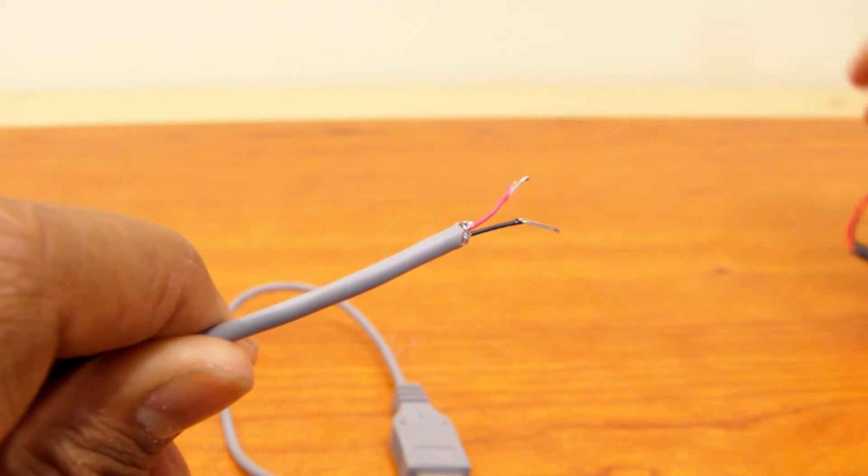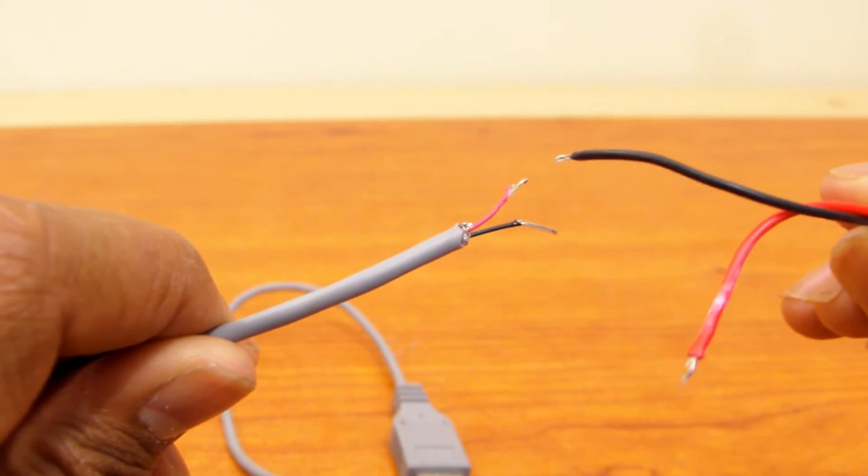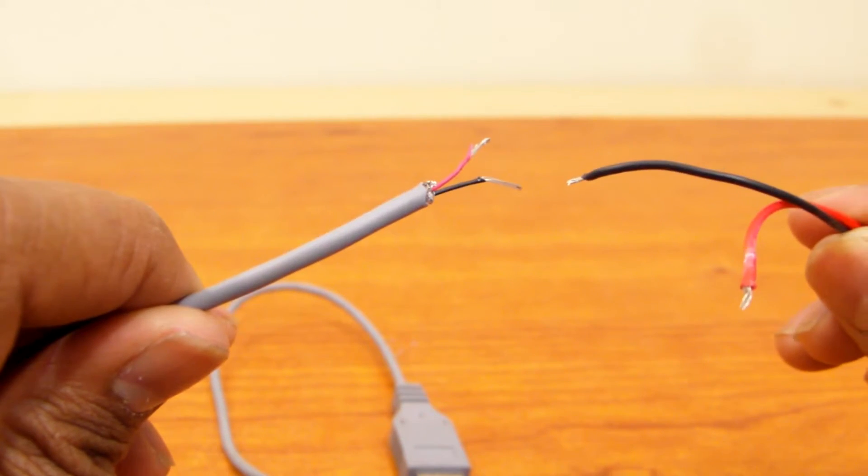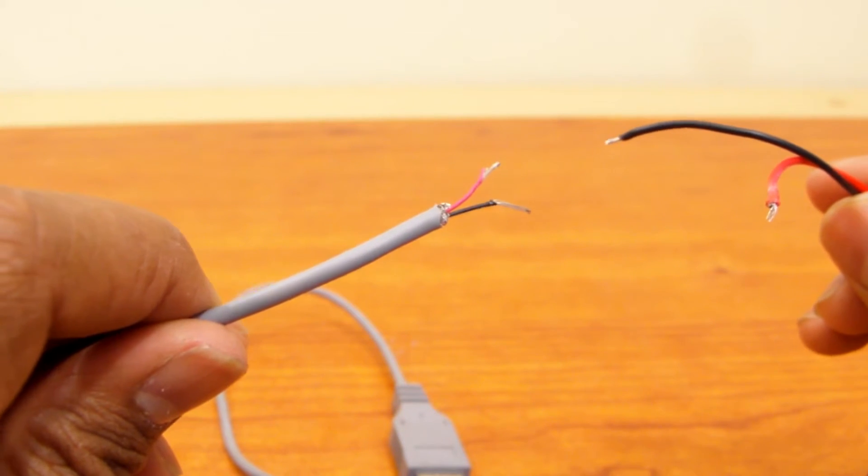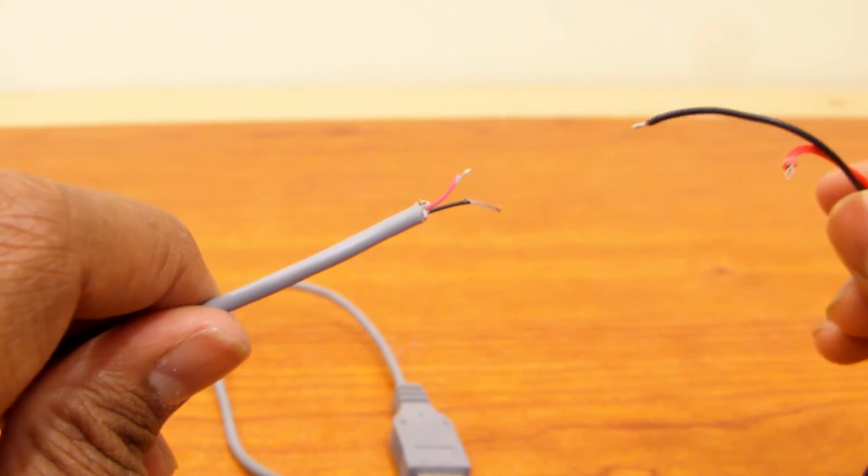Now what you're going to do is take your wires and just twist the black with the black and the red with the red. Then just use the electrical tape to hold them together.